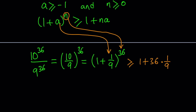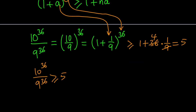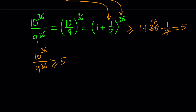Applying that inequality gives us 1 plus 36 times 1/9. Since 9 goes into 36 four times, that's 1 plus 4, which equals 5. So this basically proves that (10/9) to the power 36, equivalently 10^36 divided by 9^36, is greater than or equal to 5.